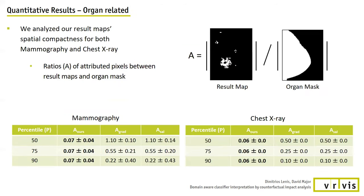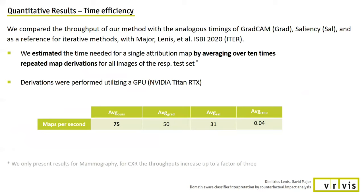For estimating the compactness of our result maps, we computed the ratio between the result mask and the organ area pixels. Our result maps are more compact than those of state-of-the-art for both mammography and chest X-ray, as visible in the bottom tables. Regarding time efficiency, our attribution network can derive 75 mammography maps per second, which is by a large margin better than state-of-the-art. Concluding our quantitative evaluations, our method yields smaller, more precise, and hence more informative attribution maps compared to state-of-the-art without sacrificing computational efficiency.